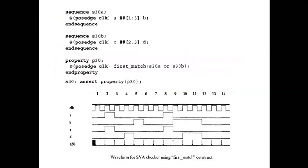Next we will see the coding part. Here is a simple program: sequence S30A at the positive edge of the clock, A double-hash A is to 3, B — end of the sequence. Here A and B sequences are generated. The next sequence, S30B, at positive clock: C double-hash 2 to 3, D — end of the sequence. Here also C and D are generated. The main property P30 is defined to check the first_match construct: at the positive clock, first_match(S30A or S30B). The clock diagram shows the clock sequence, then signals A, B, C, and D are generated at that clock.